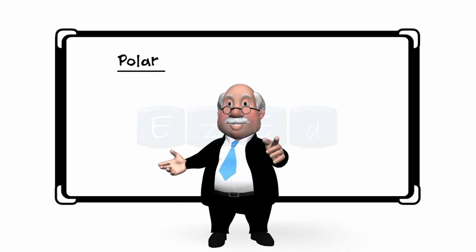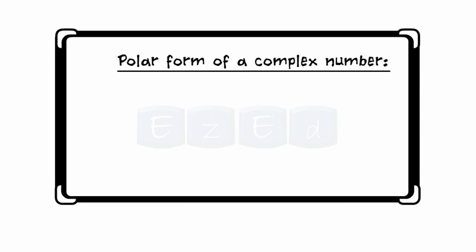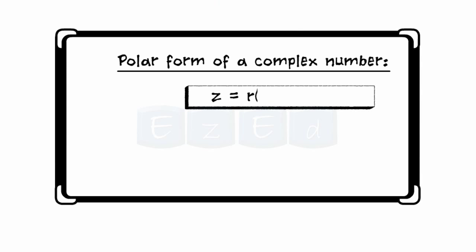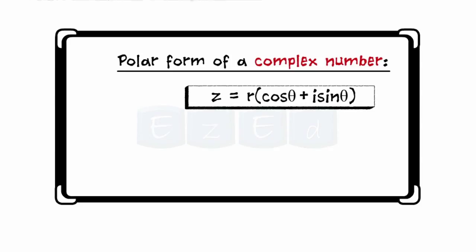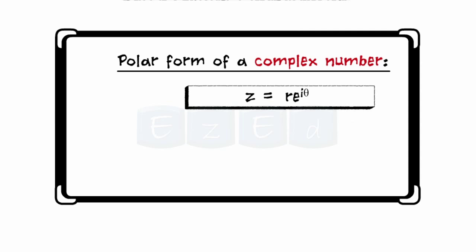Do you remember the polar form of a complex number? It is z = r(cos θ + i sin θ). Also, by Euler's equation, e^(iθ) = cos θ + i sin θ. We therefore obtain another way to denote a complex number — the exponential form: z = r·e^(iθ), where r is the modulus of z and θ is the argument of z.